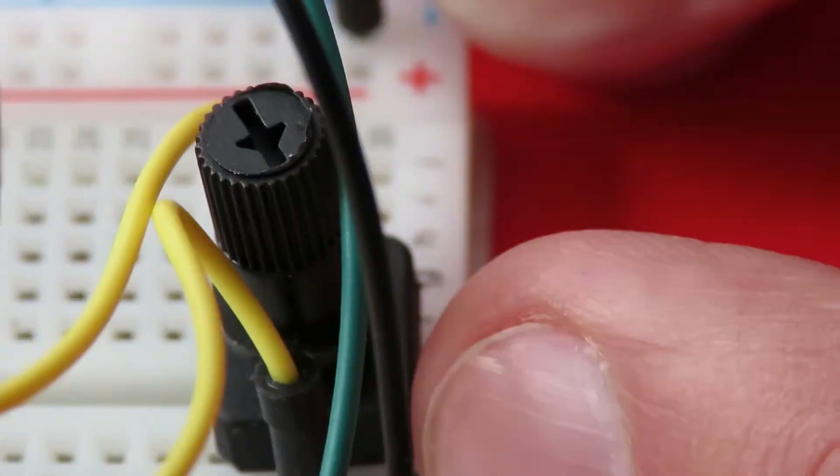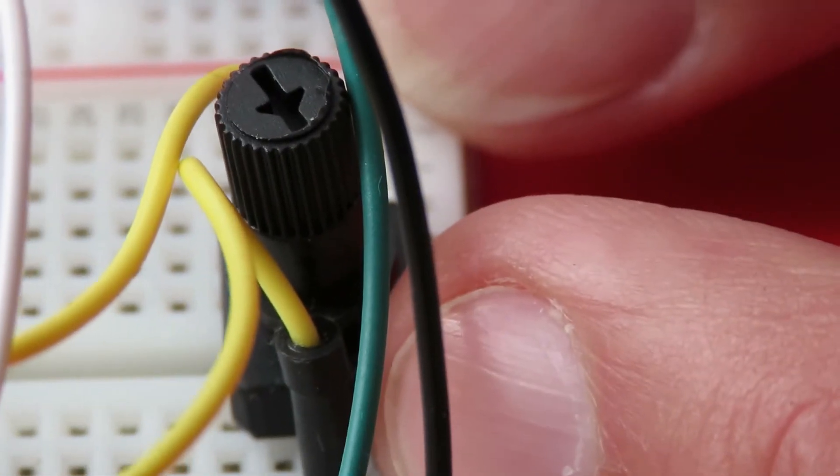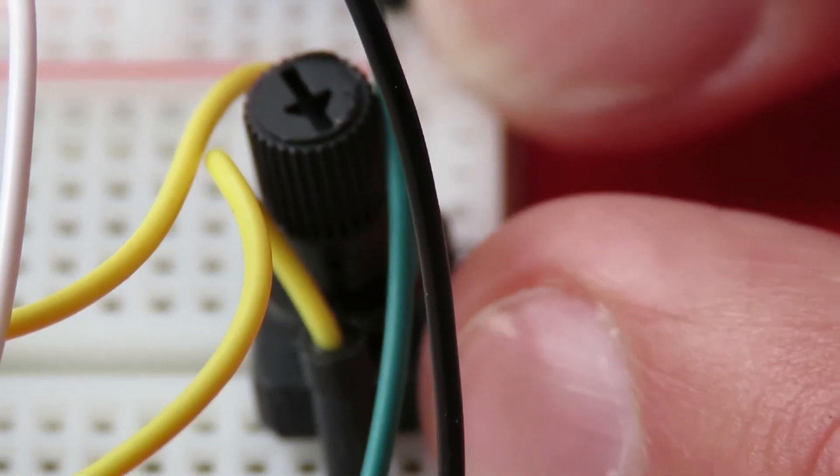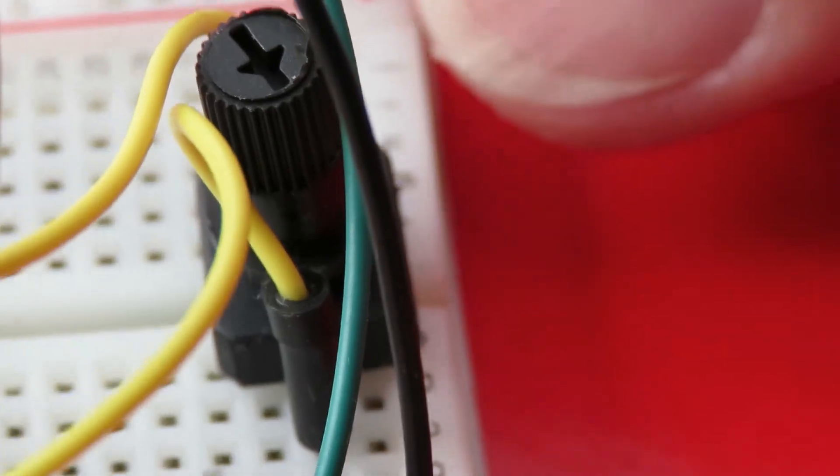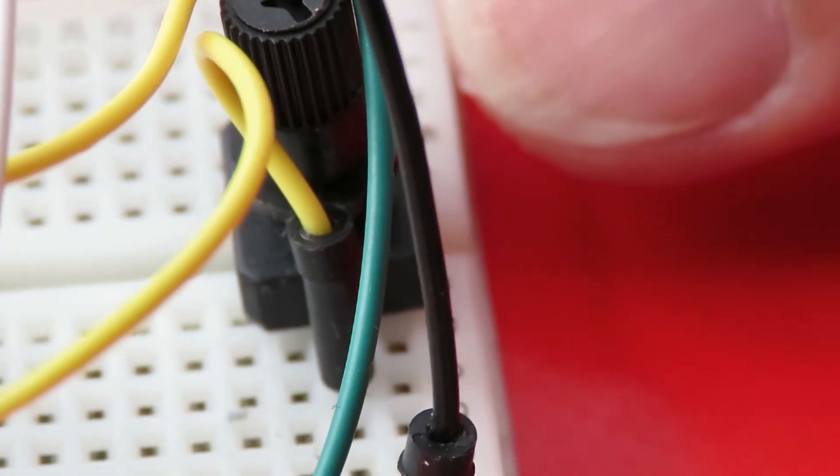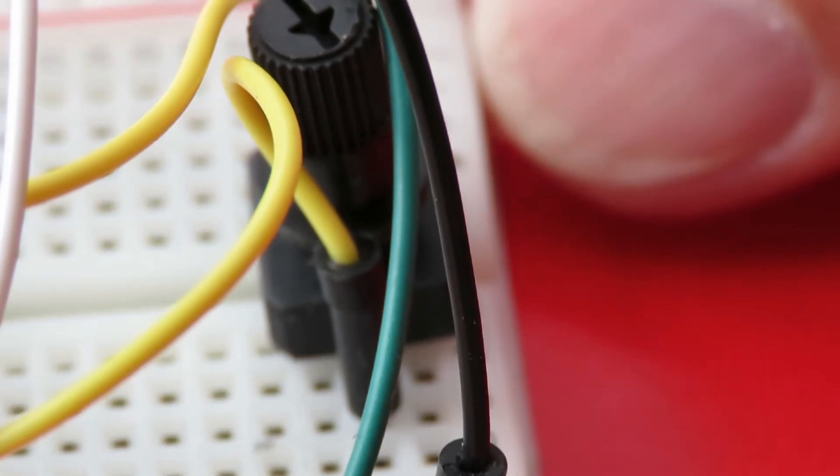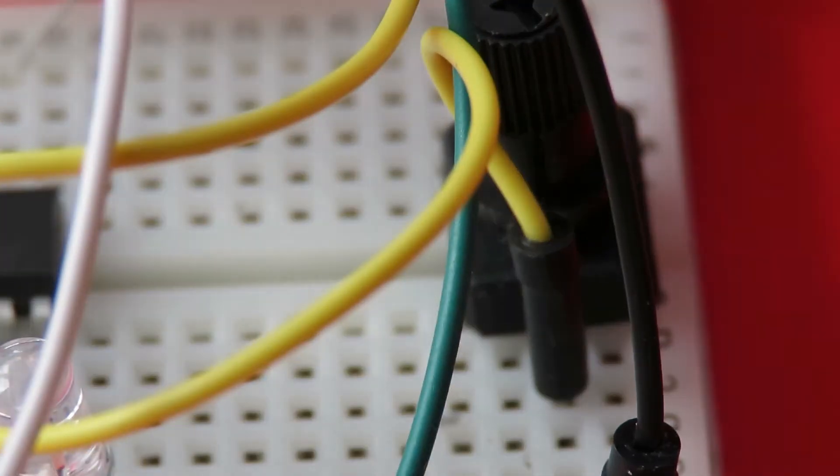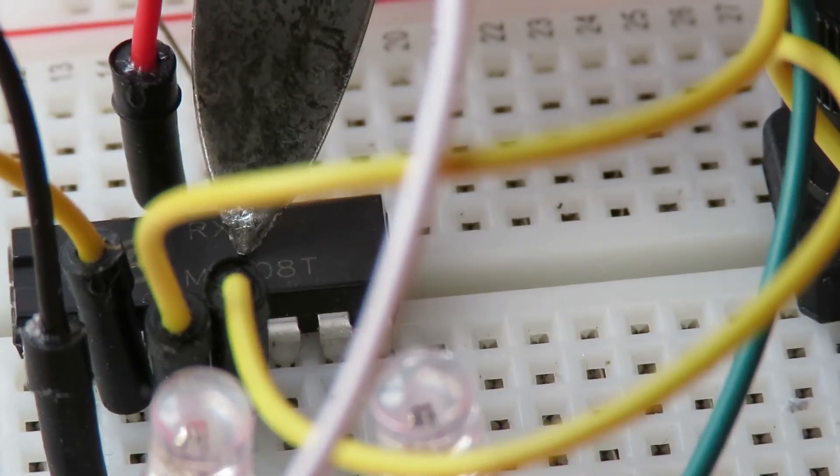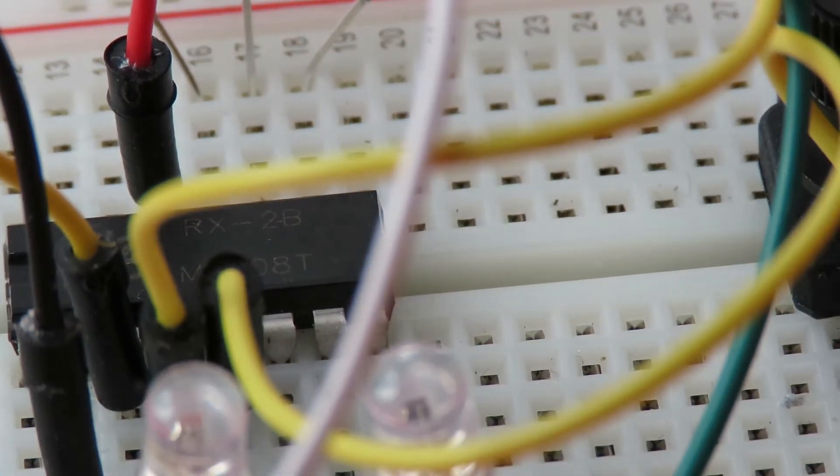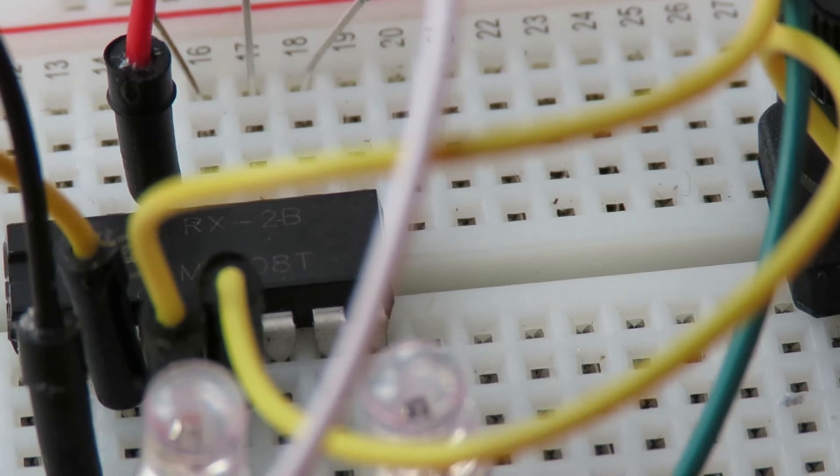4 and 5 go to this potentiometer so that we can adjust the frequency. Now that's not your 27 megahertz or your 40 megahertz frequency. That's the actual frequency of the signal.